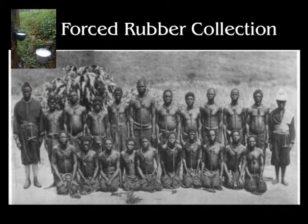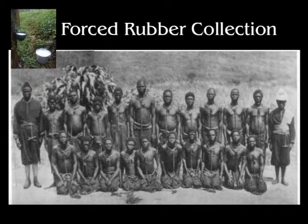The working conditions were such that if they didn't meet their quota, they'd be beaten, whipped, or even killed. Additionally, rubber comes out almost like a sticky, tacky substance and has to be dried before being weighed. In a jungle situation where men were forced to move from place to place, they would spread it on their arms or chest, wait for it to dry, and then peel it off — and when they did, layers of their skin would come off as well.